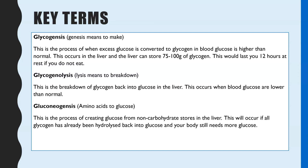The final term is gluconeogenesis. 'Gluco' means glucose, 'neo' means new, and 'genesis' means to make — so gluconeogenesis means making glucose from something new. Most of the time amino acids are used to make glucose, but it can also involve using glycerol from lipids. This only happens when all glycogen stores have been used up and glucose is still needed, so the body resorts to breaking down lipids and proteins to undergo gluconeogenesis.